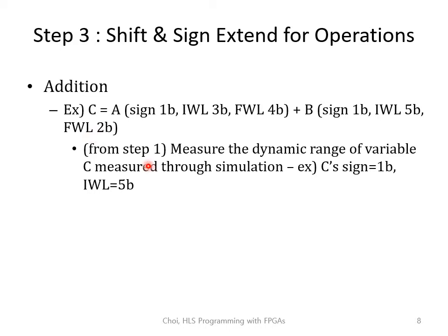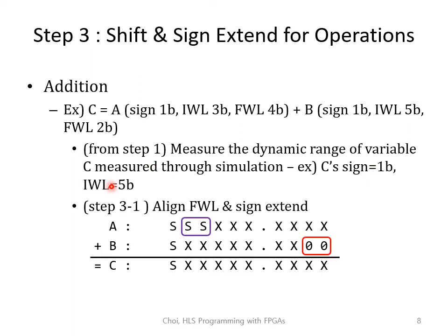From step 1, let's assume you already know C needs a sign bit and IWL of 5 bits. What you need to do now is align the fractional part and sign extend. Variable A has 4 fractional bits and variable B has 2 fractional bits. So for addition, you need to add 2 bits of zeros to variable B to align the binary point.